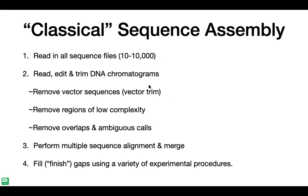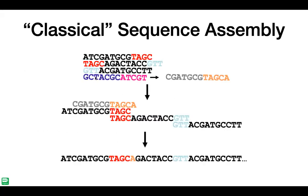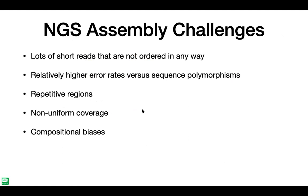For NGS, the main problem is that reads are much shorter and not ordered in any way. It's difficult to find the correct position of something that is 350 bases within a genome of 300,000 or 3 billion bases. There are also errors in the sequencing process itself, making it hard to determine whether a nucleotide mismatch is a sequencing error or a valid sequence polymorphism.